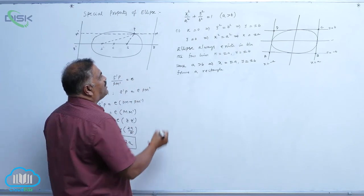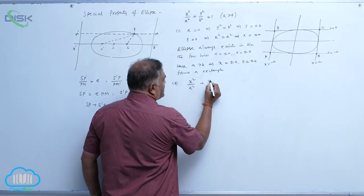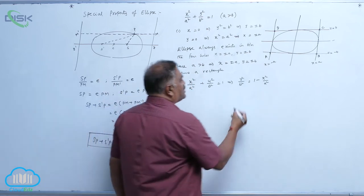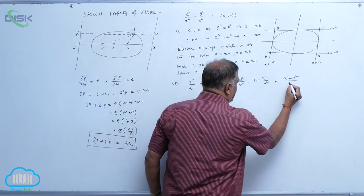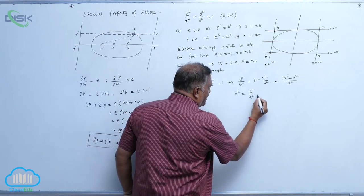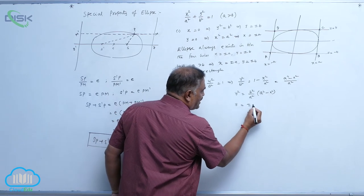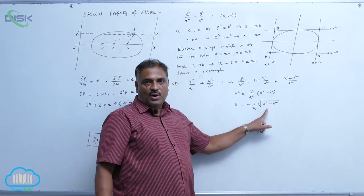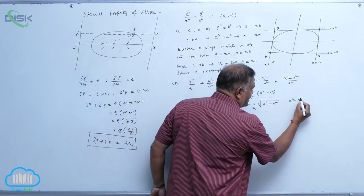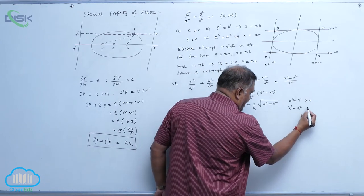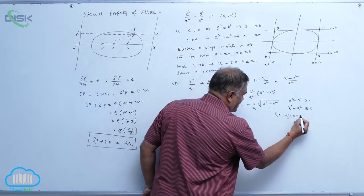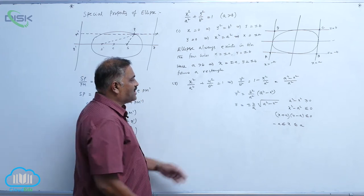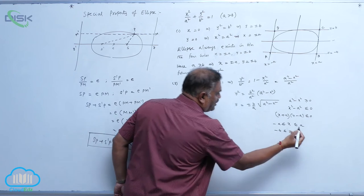From x square by A square plus y square by B square equal to 1, we get y square by B square equal to 1 minus x square by A square, that is A square minus x square over A square. So y square equals B square by A square into A square minus x square, and y equals plus or minus B by A times the square root of A square minus x square. This is defined whenever A square minus x square is greater than or equal to 0, which means x plus A into x minus A is less than or equal to 0. The curve always lies horizontally between minus A and A. Similarly, minus B is less than or equal to y is less than or equal to B.